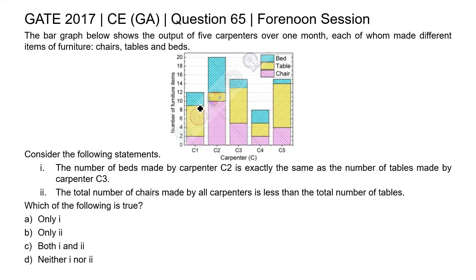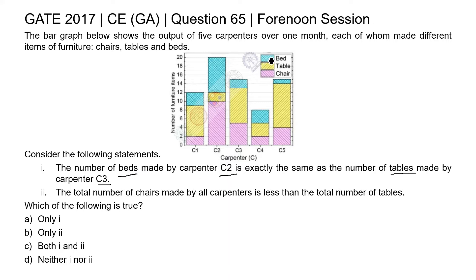In this question, a bar graph is given and two statements are given. We need to check which statement is true, so we check each statement one by one. The first statement is: the number of beds made by carpenter C2 is exactly the same as the number of tables made by carpenter C3. First, check the number of beds made by carpenter C2.